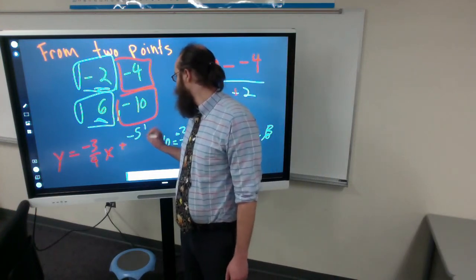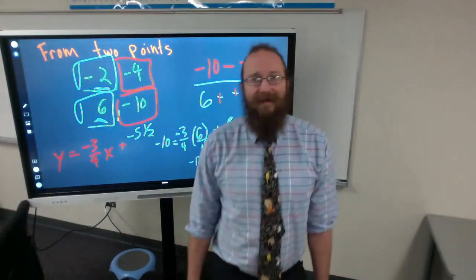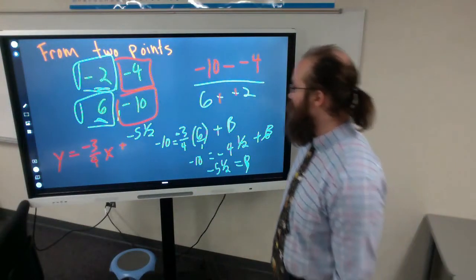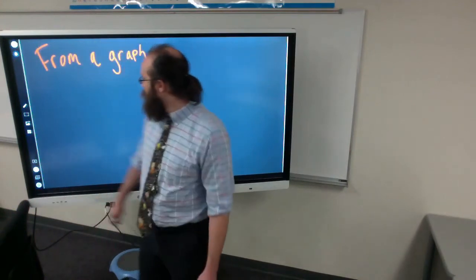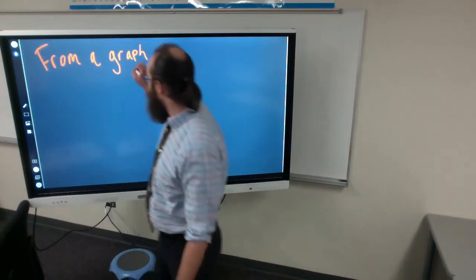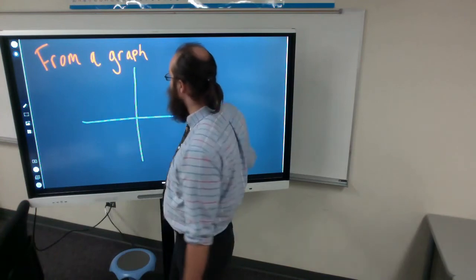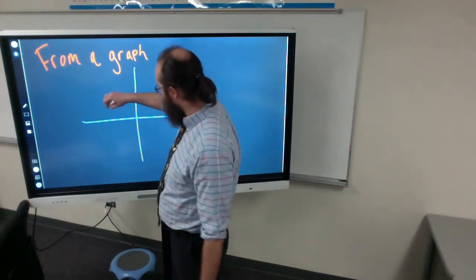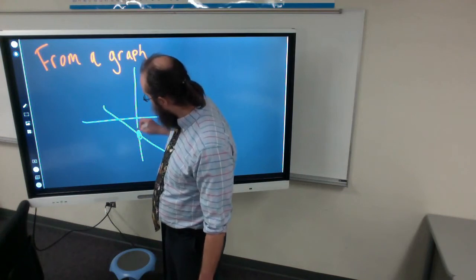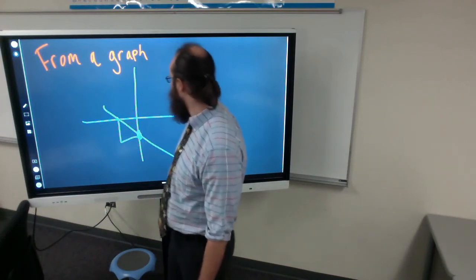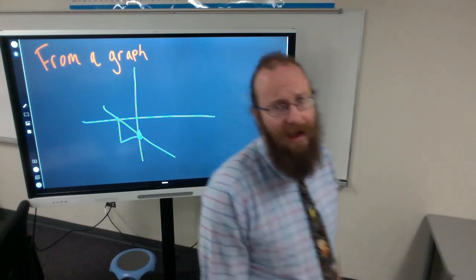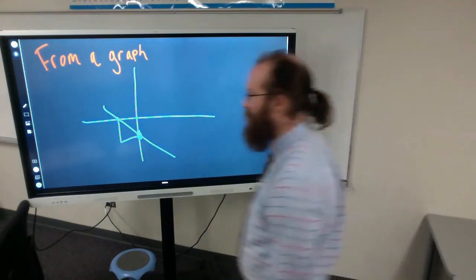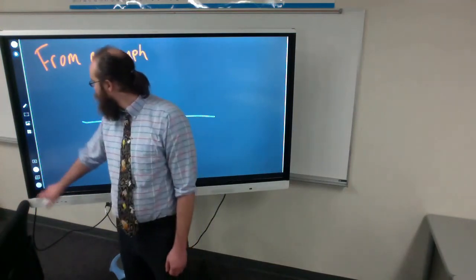Negative three fourths x plus negative five and one half. Hopefully that all made sense to you. We should be able to do it from a graph. You figure out where that line crosses the y intercept, you calculate the slope. The slope goes in for the m value and the y intercept goes in for the b value. So we already practiced that.